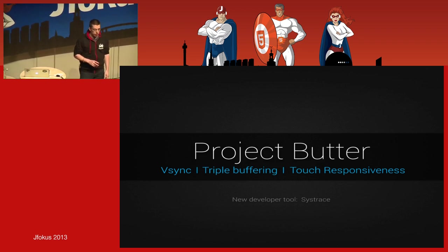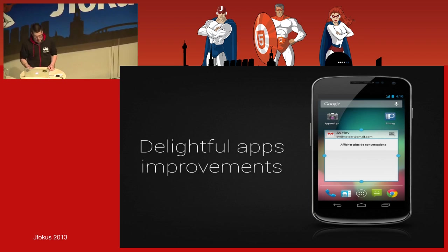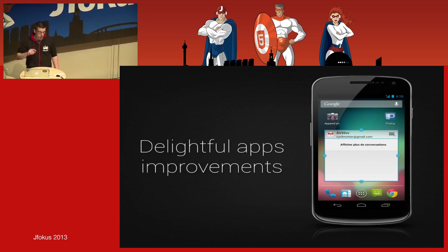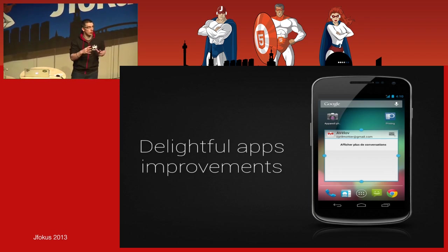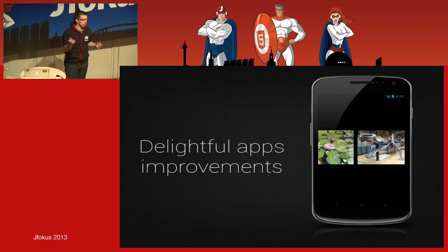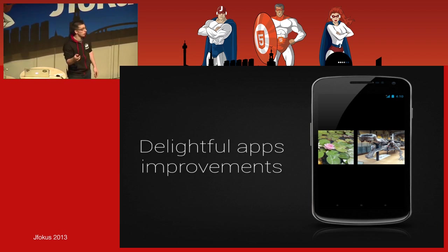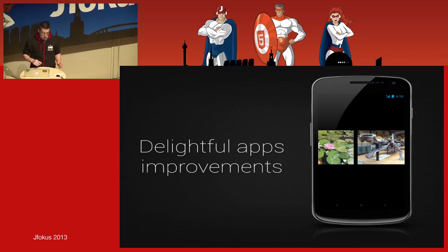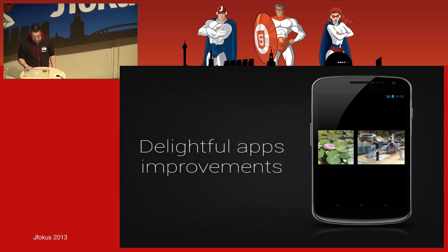Some other improvements were made to the built-in applications. In the launcher app, you can now resize widgets, which was not possible before. If you resize too much, the system will automatically move the icons to make enough space for the widget. The camera application has also been improved with instant browsing — or gallery view. When swiping in the camera, you can access photos you've taken, and swipe up to remove one. You can still undo if you make a mistake.